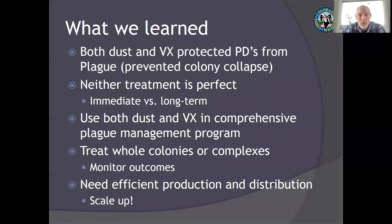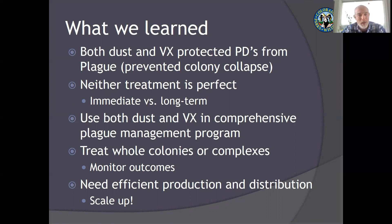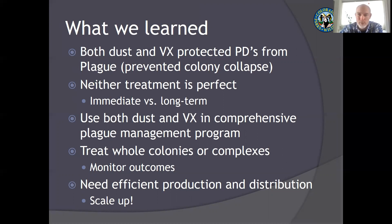So what did we learn from this experiment? Both dust and vaccine could protect prairie dogs from plague, at least in terms of preventing complete colony collapse. Neither treatment was perfect, and which you use would probably depend on whether your goals are immediate protection or longer-term protection you might get with a vaccine. We felt we should be using both tools in a plague management program to offset their respective positives and negatives. And clearly, treating small plots within large colonies or complexes was not going to be effective — we needed to scale up, which required more efficient vaccine production and bait distribution.